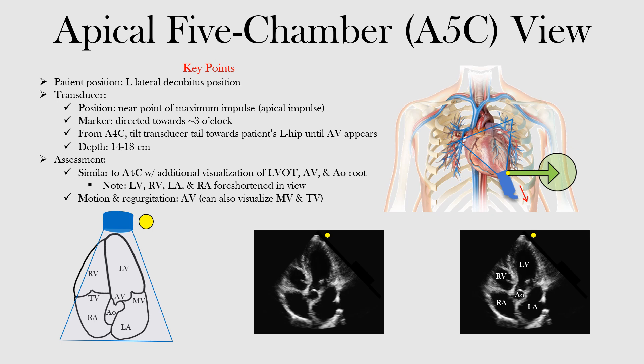In this view, we want the patient in the left lateral decubitus position. We want to put the transducer similar to the apical four-chamber view, near the point of maximum impulse or apical impulse, right here at the apex of the heart. We want to direct the transducer to 3 o'clock — imagine a clock: 6 o'clock at the bottom, 9 to the left, 12 at the top. So the markers are oriented towards 3 o'clock.